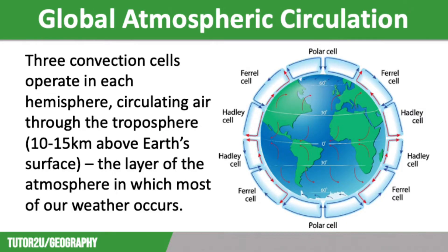In the Northern and Southern Hemisphere there are three cells operating, circulating air throughout the troposphere. This is the layer of atmosphere closest to the Earth, between 10 and 15 kilometres above the Earth's surface, and it is where most of Earth's weather takes place. We call this global atmospheric circulation.